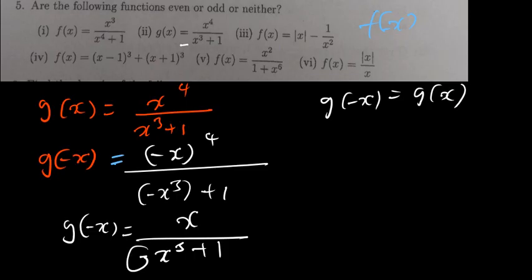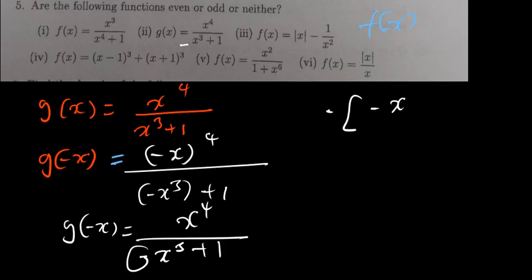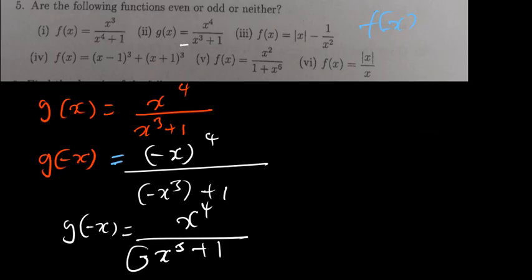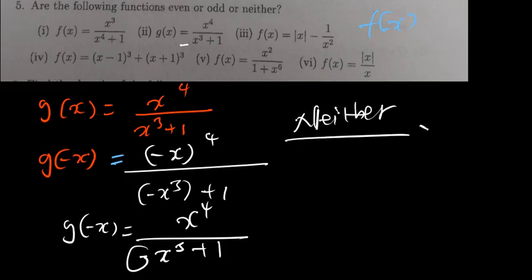Is g(-x) equal to g(x)? No, because there is a negative in the denominator but not in the original. So it is not even. If I try to factor out negative: on the numerator, x⁴ has no negative, so there's nothing to factor out from the top. Since I can't factor a negative from just the denominator, the function is not even and not odd — it is neither even nor odd.